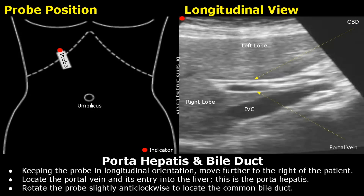While staying in longitudinal orientation, move further to the right of the patient, just below the right costal margin. You will start to see the porta hepatis around this area. It will be seen in the middle of the right costal margin, approximately. Locate the portal vein and its entry into the liver.